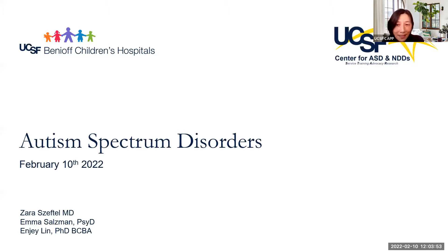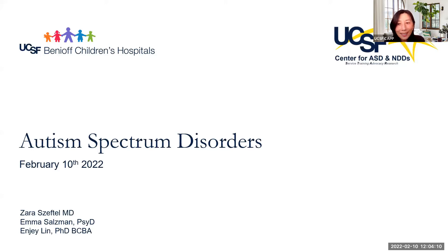Dr. Emma Salzman is a licensed clinical psychologist in the Department of Psychiatry and Behavioral Sciences at UCSF. She specializes in comprehensive diagnostic evaluations for a range of neurodevelopmental disorders, including autism spectrum disorders. Dr. N.G. Lin is a clinical psychologist and associate clinical professor at the UCSF Center for ASD and NDDs. Her clinical and research interests are in the assessment and treatment of people with autism spectrum disorder and other neurodevelopmental disorders.